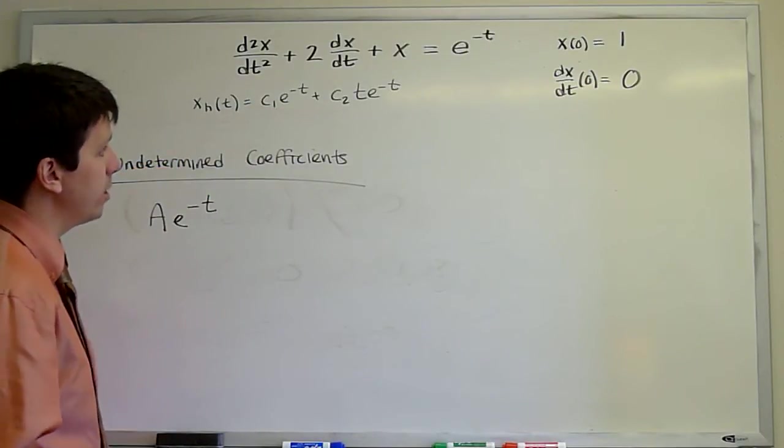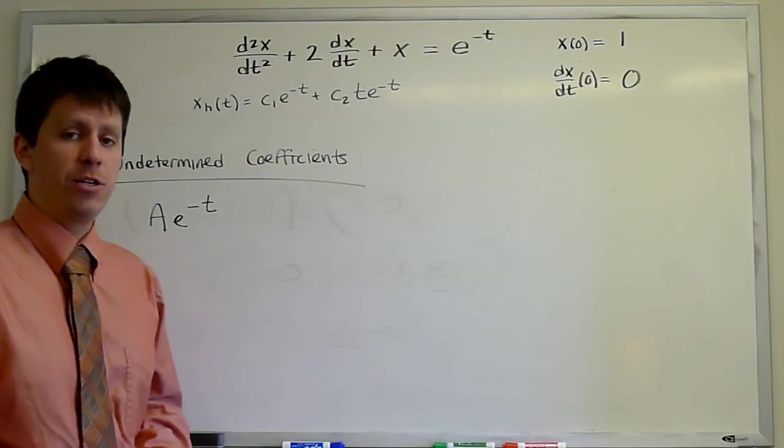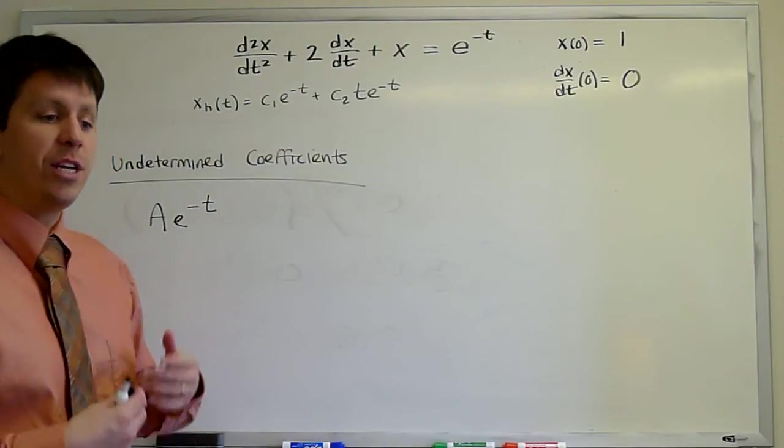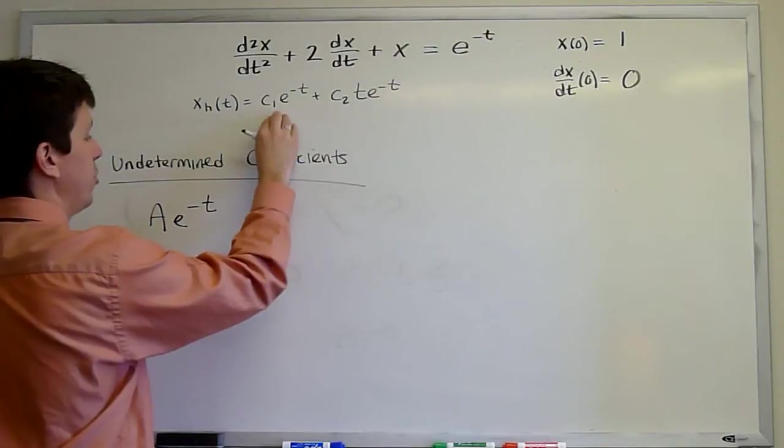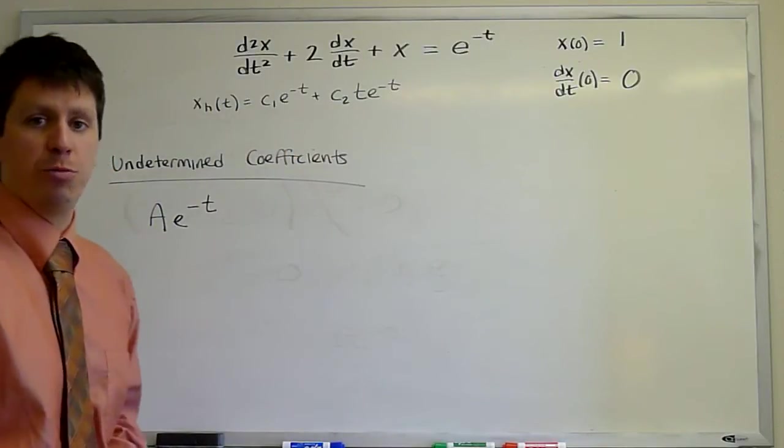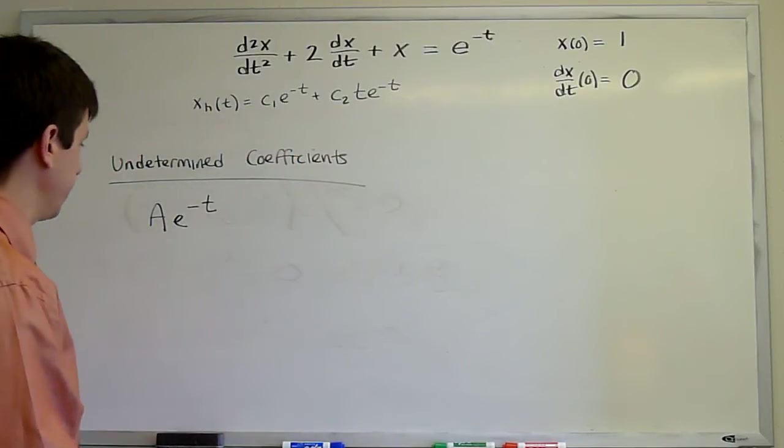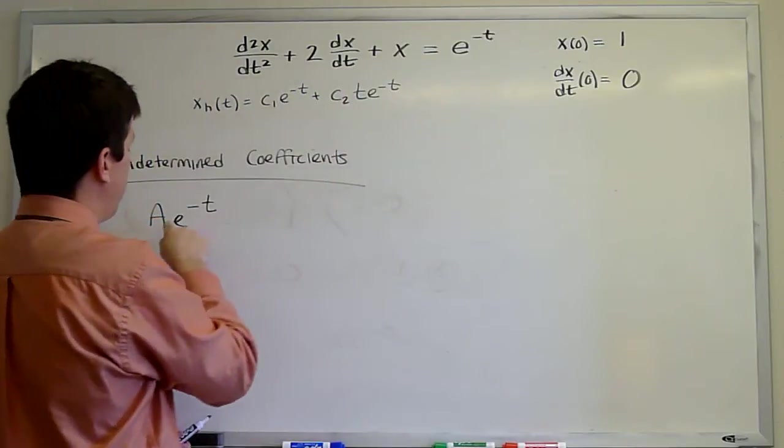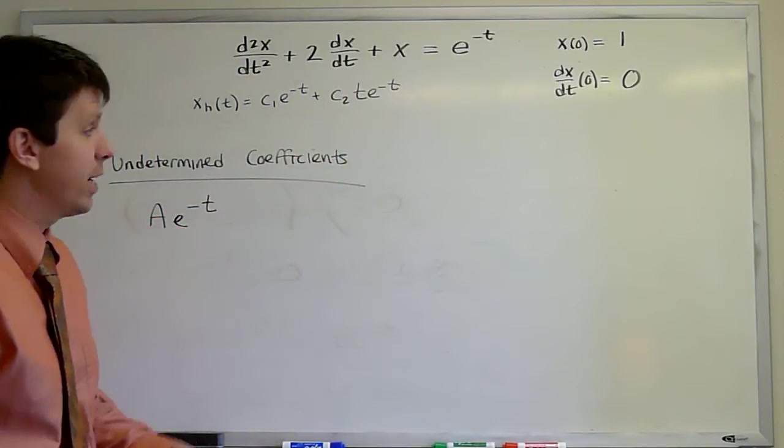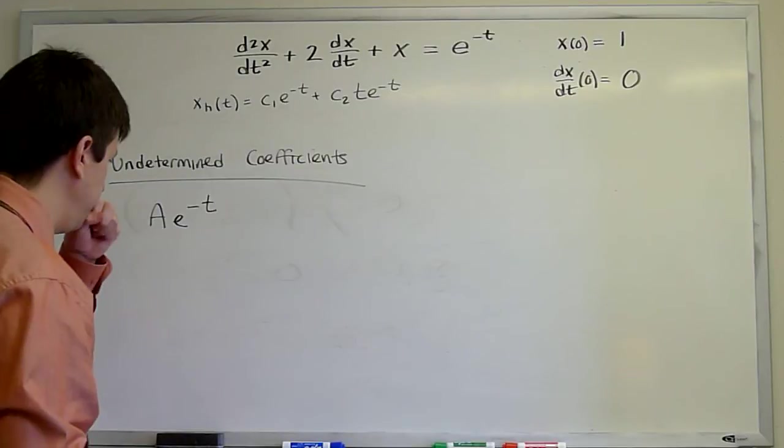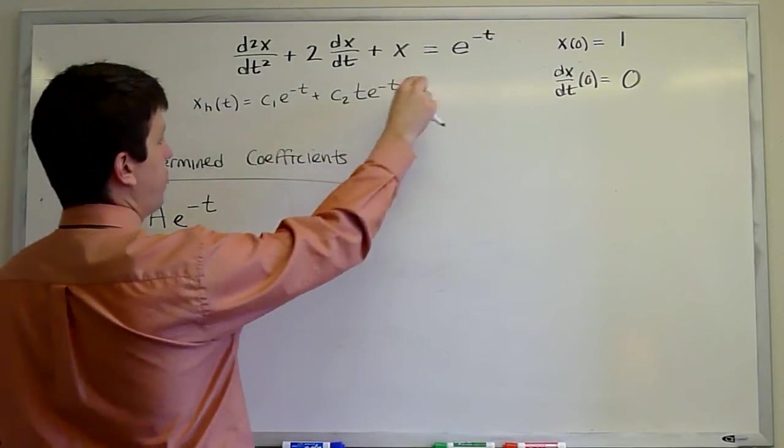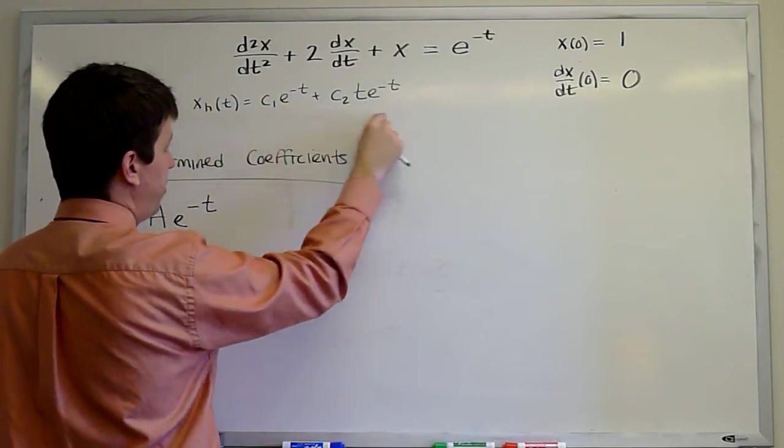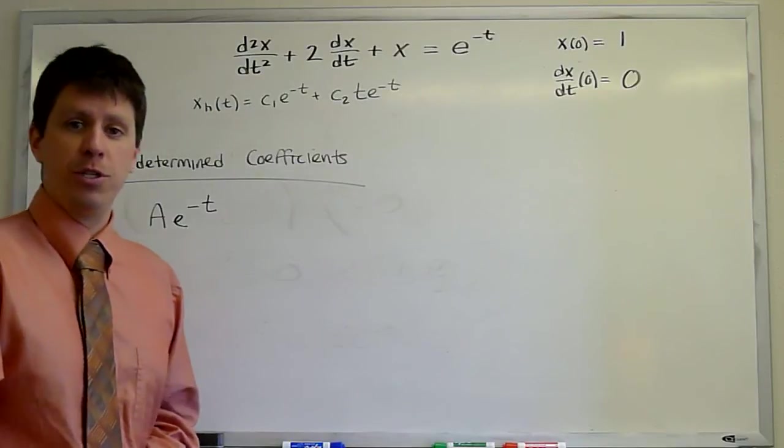This could be called a resonant forcing, even though it's not a sinusoidal forcing as that word typically applies to sinusoidal cases. But in general, it is a forcing of the same form as one of the homogeneous solutions. And so we could, in an abstract sense, apply the word resonant to that forcing. So this won't work. If I plug in this guess, a e to the minus t, the left-hand side operating on this will equal zero because this is a solution to the homogeneous problem. What we have here is a case where the forcing is resonant and the root of the characteristic equation that produced these two solutions was a single root with multiplicity 2.